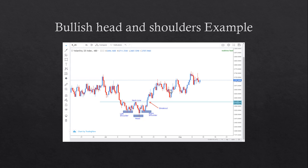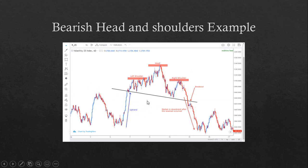In the bullish head and shoulders example, we have a left shoulder, a head, a right shoulder, and the breakout at the neckline. This candlestick on the 8-hour chart broke out, showing strong momentum to the upside. In the bearish head and shoulders example — the inverse of the bullish — we have an uptrend, a left shoulder, a head, a right shoulder, and after the reversal, the market is now in a downtrend.